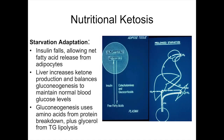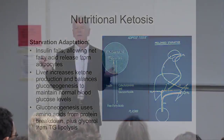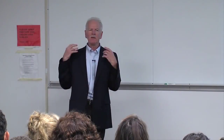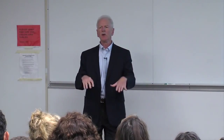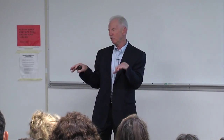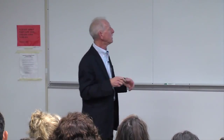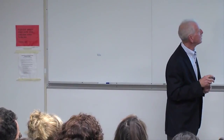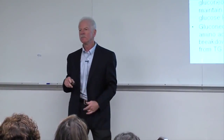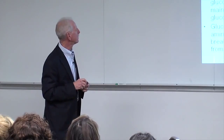As the liver makes ketones, some can be burned by muscle, but once the body goes through an adaptation process, the majority of ketones released from the liver go to the brain to help feed it. The human brain burns about 600 calories a day — it only weighs three pounds yet burns 600 calories a day. If you're eating carbs and don't have circulating ketones, the only significant fuel your brain can use is glucose. But through starvation adaptation, you can feed most of your brain's requirements from ketones rather than glucose.